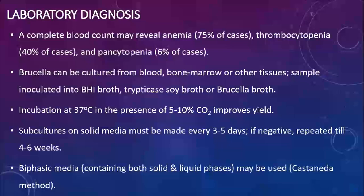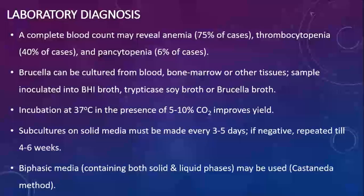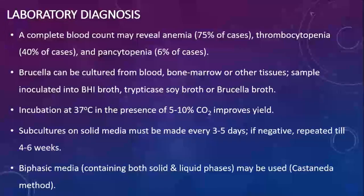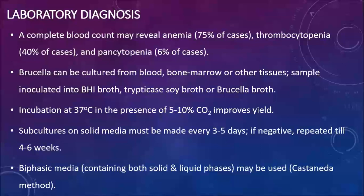In the blood picture, anemia is seen in 75% of cases, thrombocytopenia in 40%, and pancytopenia in 6%. For laboratory diagnosis, the two common methods are culture and serology. Specimens collected include blood, bone marrow, or tissue samples. Around 5–10 ml of blood is inoculated into brain heart infusion broth, trypticase soya broth, or Brucella broth, and incubated in the presence of 5–10% carbon dioxide at 37°C.